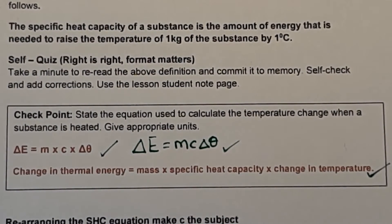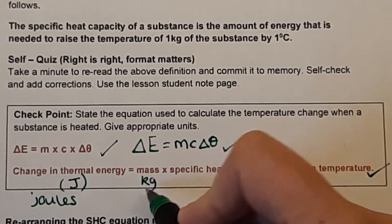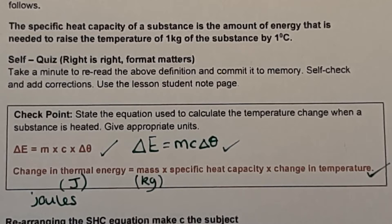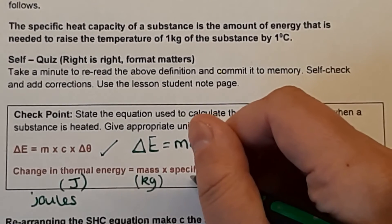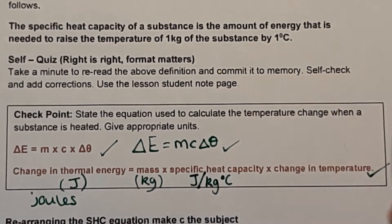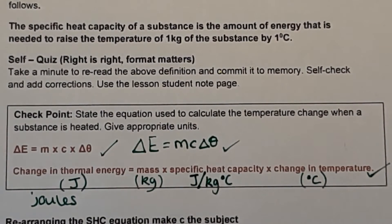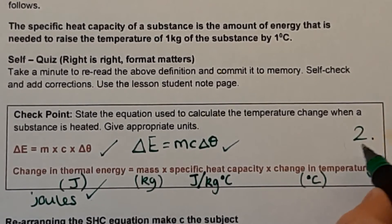For units: the change in thermal energy is in joules (capital J). Mass is in kilograms. Specific heat capacity is in joules per kilogram per degree Celsius (J/kg°C). Change in temperature is in degrees Celsius. The most important unit is joules for the change in thermal energy. There are two marks available: the first for the equation being correct, the second for the units being joules.